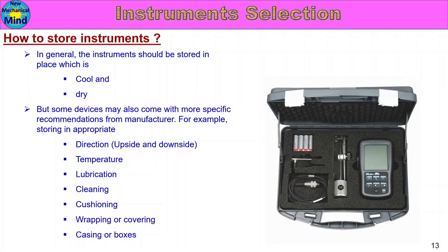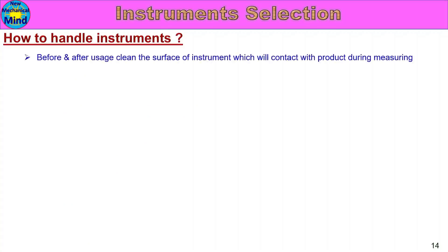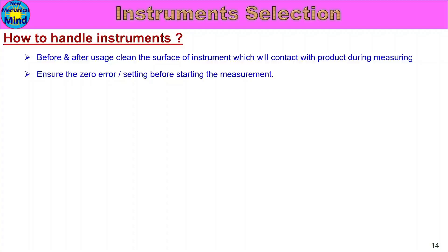How to handle instruments. Before and after usage, clean the surface of instruments which will contact with the product during measuring. Check the surface of the product and the parameters. Ensure the zero errors are set correctly before starting the measurement — check for positive error or negative error and confirm it is corrected before starting measurement.